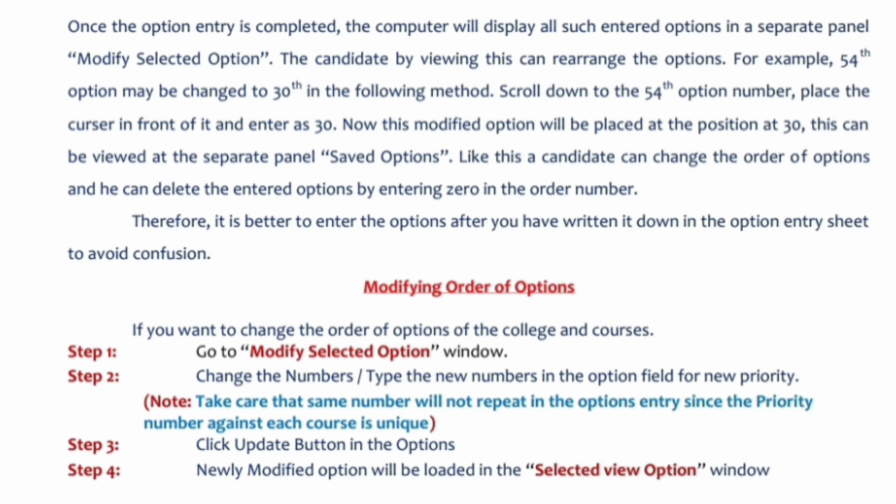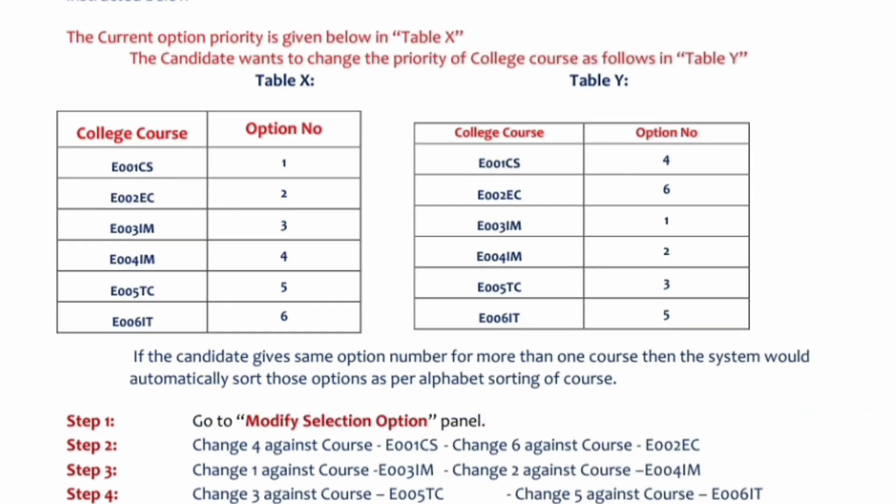Now I will explain how to modify option entries. Step one: go to the modify selected options window. There you can change the number and type. Step three: click the update button. Once you change, you click update. Then select view option, and you will see the new set of option entries after modification. Then you submit those as the final entry for round one. What you submit in round one becomes your final entry for round two and round three — you cannot change after that. But just after the mock entry, you can change — that is the purpose of the mock entry.